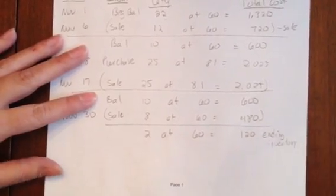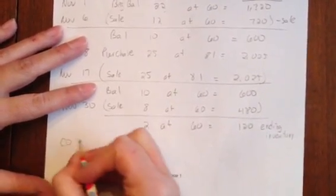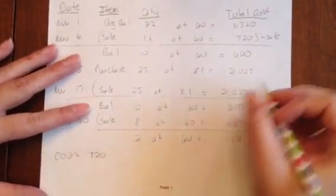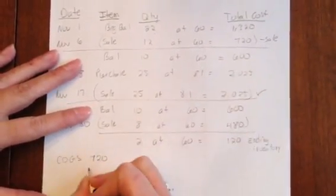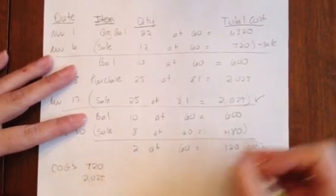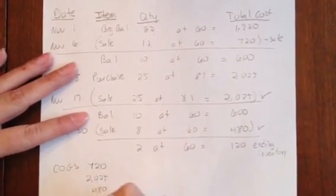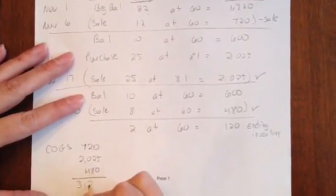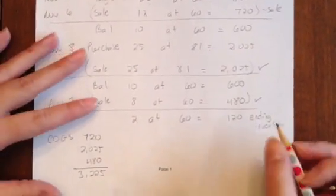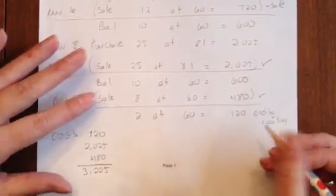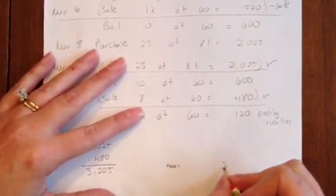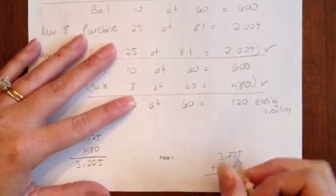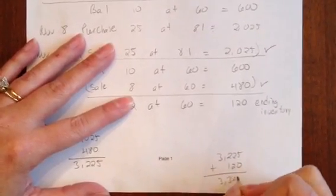Let's calculate our cost of goods sold. We had a sell of $720, another sell of $2,025, and another sell of $480. So our total cost of goods sold is $3,225, ending inventory is $120. Just like on FIFO, let's do our check. $3,225 plus $120 gives us $3,345.